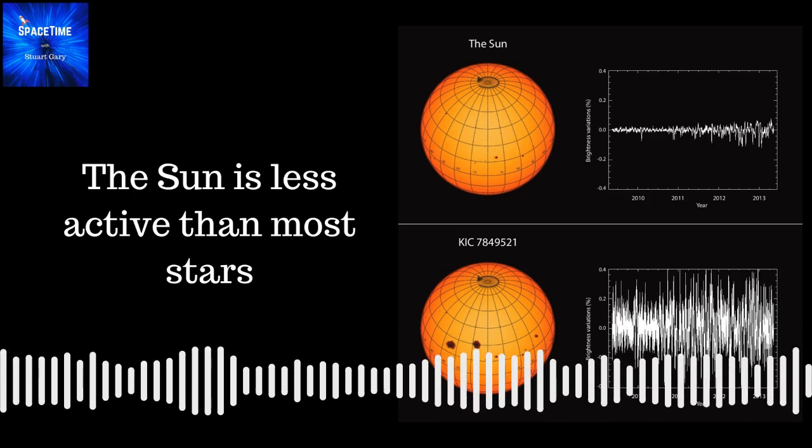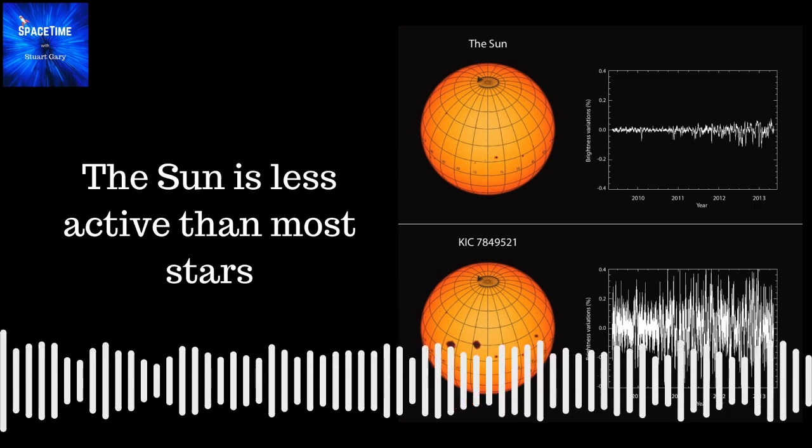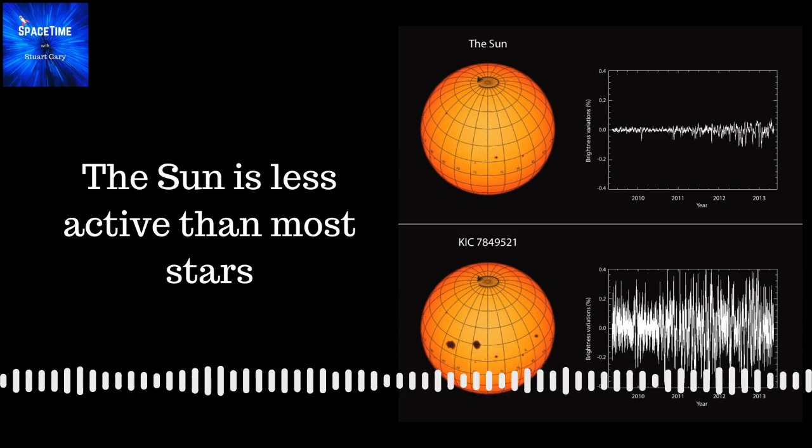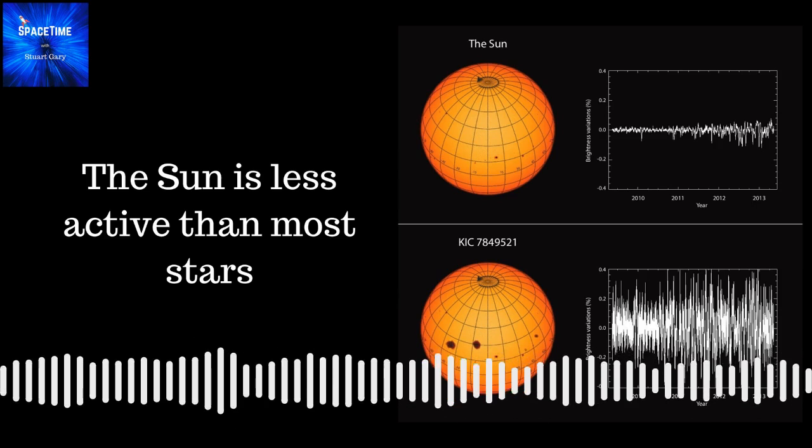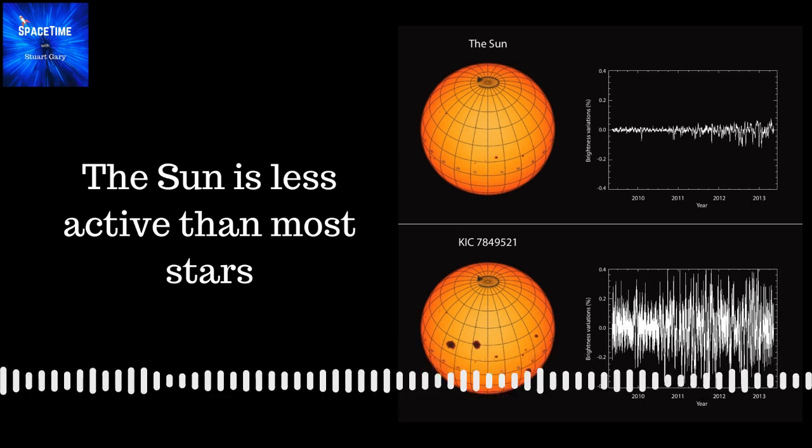A report in the journal Science, based on an analysis of 369 sun-like stars, shows that solar brightness variations are extremely weak, just 0.07% compared to other stars.